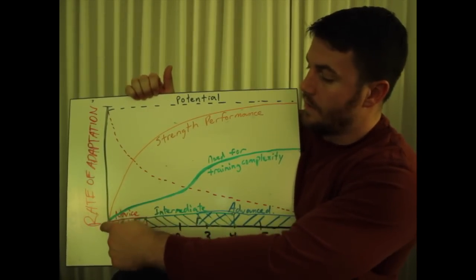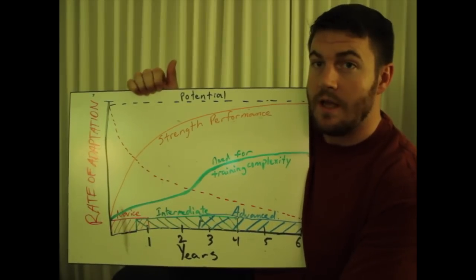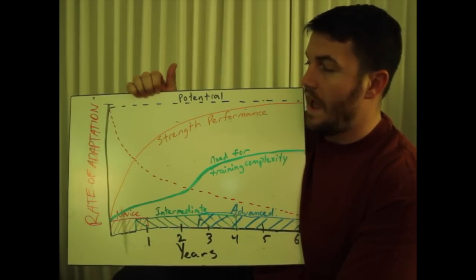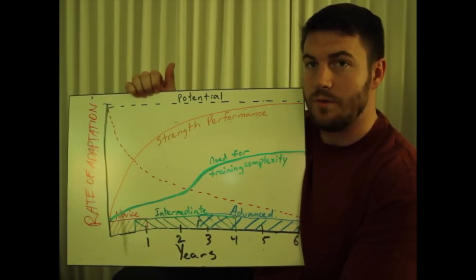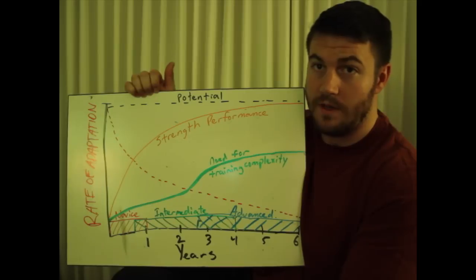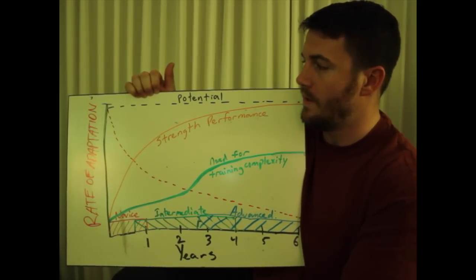You should note that the red over here is discussing rate of adaptation. This refers to how quickly you can recover and adapt to a stressor or workout stimulus. For powerlifting this would be the stressor of barbell movement.